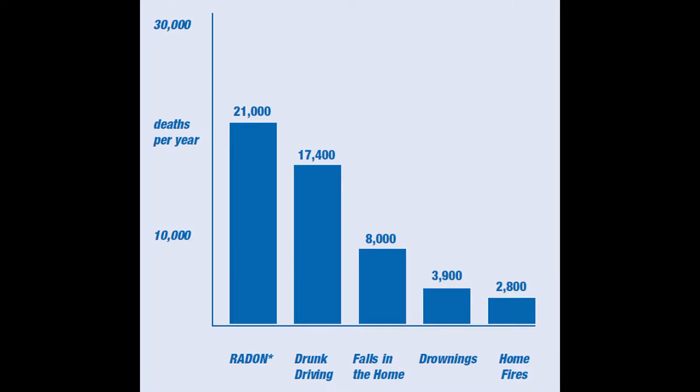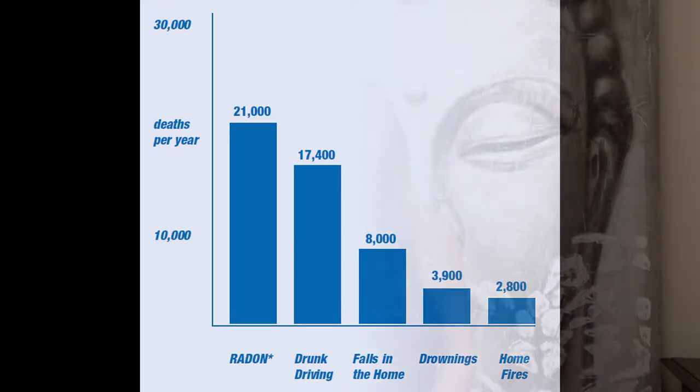It even kills more people than drunk drivers — check out this graph. Radon can be found all over the US. Radon comes from the natural radioactive breakdown of uranium in soil, rocks, and water, and gets into the air you breathe. It can get into any type of building — homes, offices, and schools — and result in a high indoor radon level.